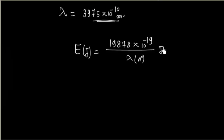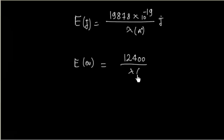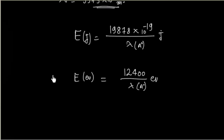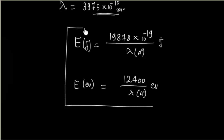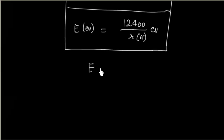To summarize: energy in Joules = 19.878 × 10⁻¹⁹ / λ in angstroms. We also have another formula: energy in eV = 12400 / λ in angstroms. Using these two readymade formulas, you can calculate the energy of a photon in Joules or electron volts with less calculation, because the value of h × c is already incorporated.